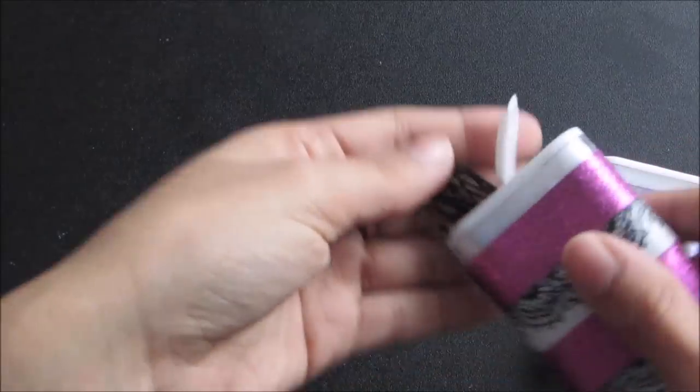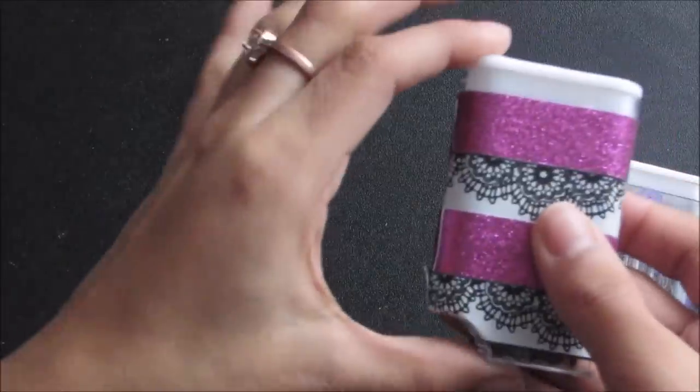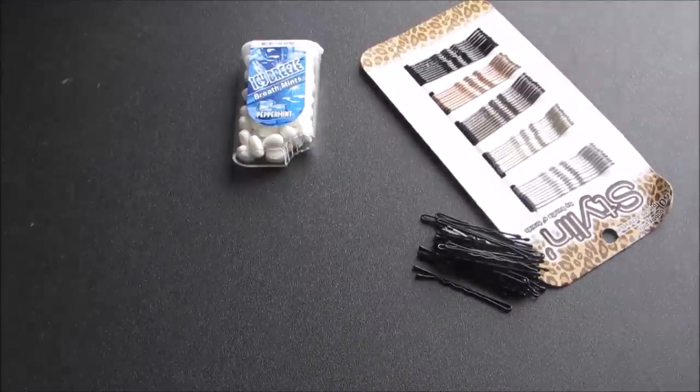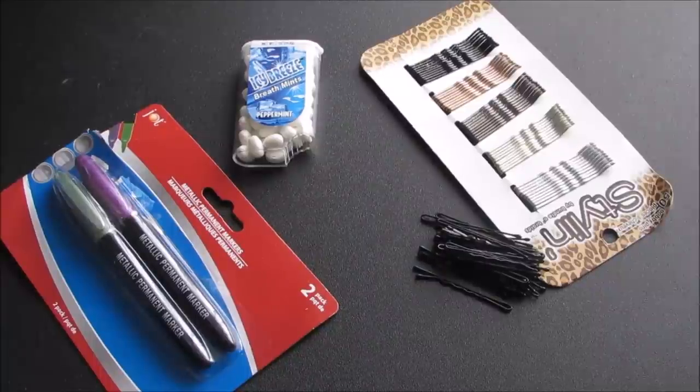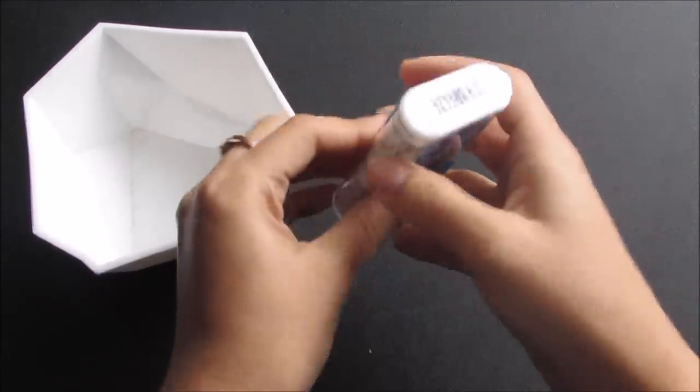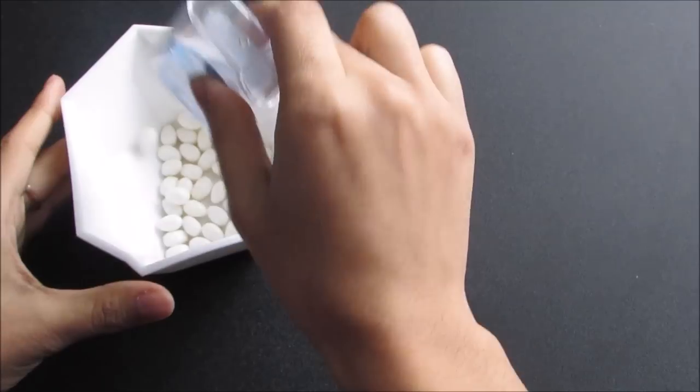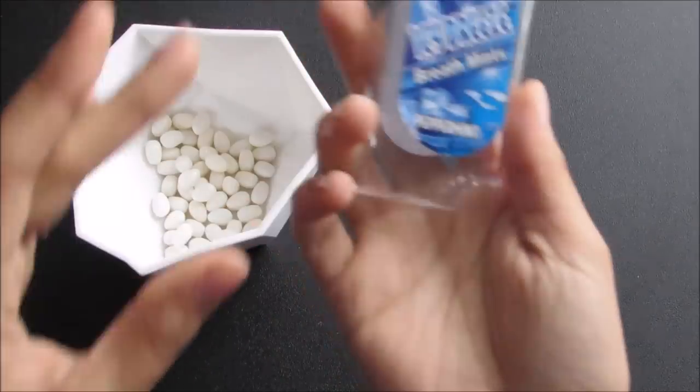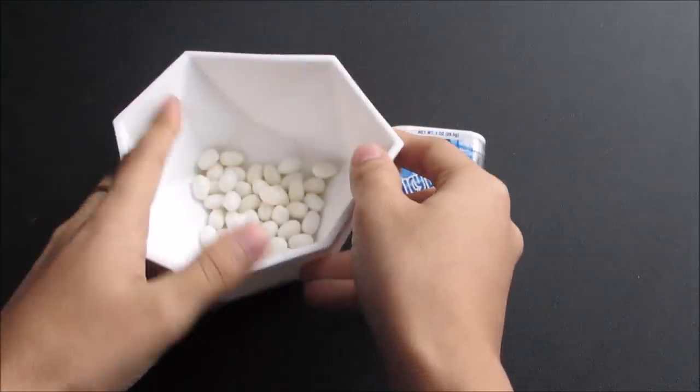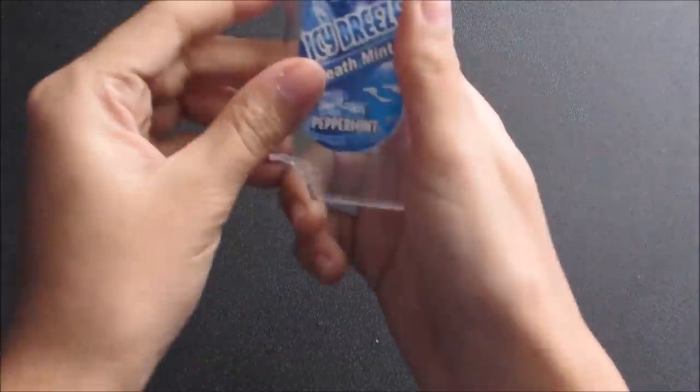So the first DIY is perfect for girls who use a lot of bobby pins. You're going to need some bobby pins, Tic Tacs, and metallic markers. I would recommend using paint because that would be so much better. Start off by emptying the Tic Tac container, either eat the mints or throw them away. I got these at a dollar store and they didn't have original Tic Tacs so I had to deal with this weird shape.